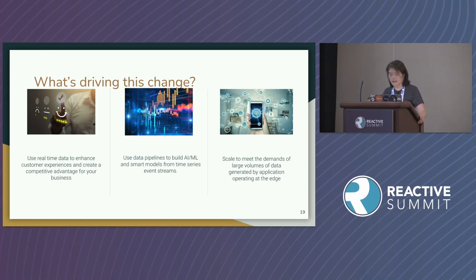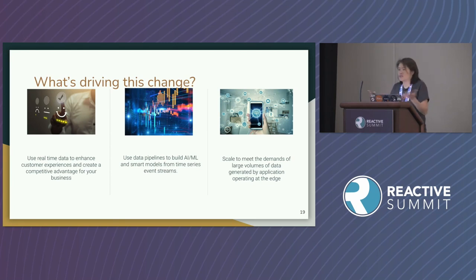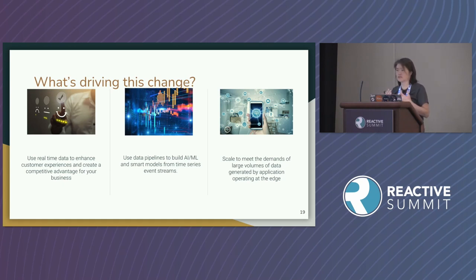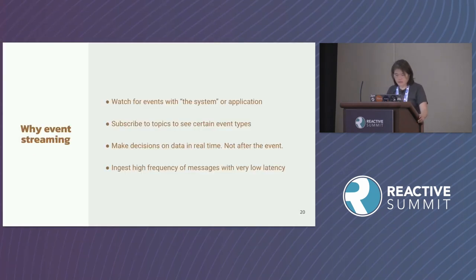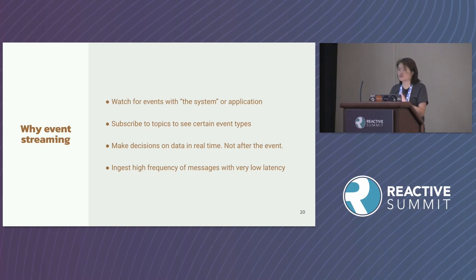The third driver is scalability — systems must handle large volumes of data generated by applications operating at the edge. For example, IoT devices across huge fields collecting weather data from thousands of acres of land — you install IoT devices, collect all the data using a PubSub approach, and it scales very well. Event streaming lets you watch for events in your system or application, subscribe only to topics of concern, get data in real time, and ingest high frequency messages with very low latency.